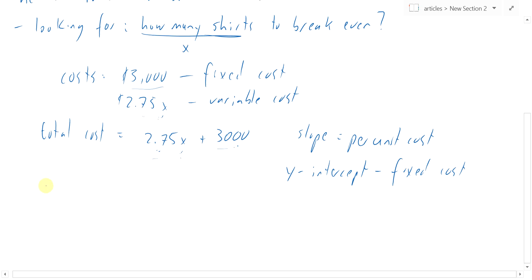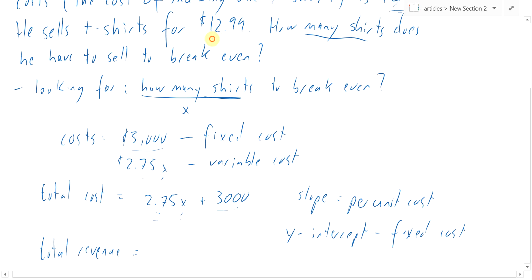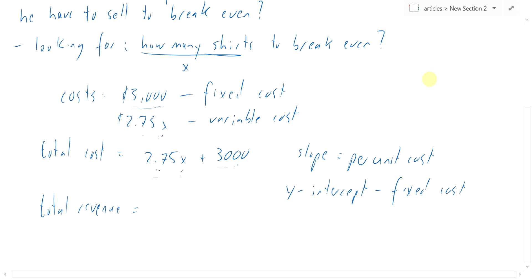Okay, what's the total revenue? Well, we haven't looked at anything else, right? He might sell other stuff. But total revenue off of t-shirts is, well, each t-shirt he gets $12.99 for. And so how much money does he bring in? Well, $12.99 on each shirt times the number of shirts he sells. So x times $12.99. So if he sells 10 shirts, that's $129.90. That makes sense.